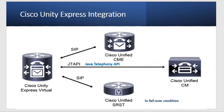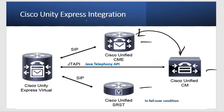Unity Express virtual can be integrated with CME, SRST, and CUC. SRST stands for Survivable Remote Site Telephony. CME, or Cisco Unified Communications Manager Express, is an alternate solution to CUCM for small networks, just as Unity Express is an alternative to Unity Connection for small networks.